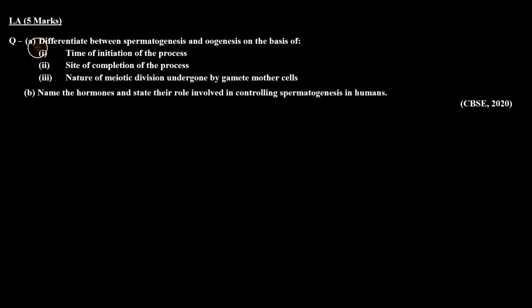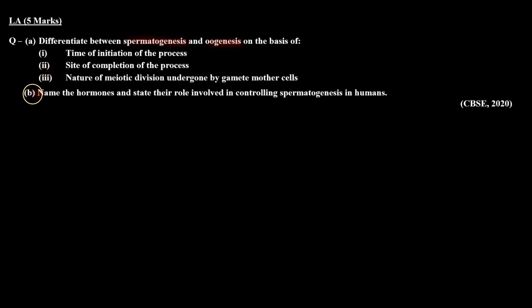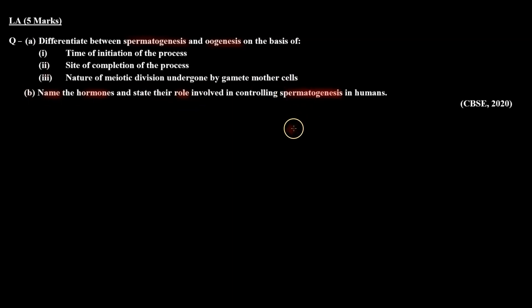So Part A mein hume spermatogenesis aur oogenesis mein differentiate karna hai on the basis of the following points, and Part B mein hume hormones ka name and function batana hai jo involved rehte hain spermatogenesis mein.